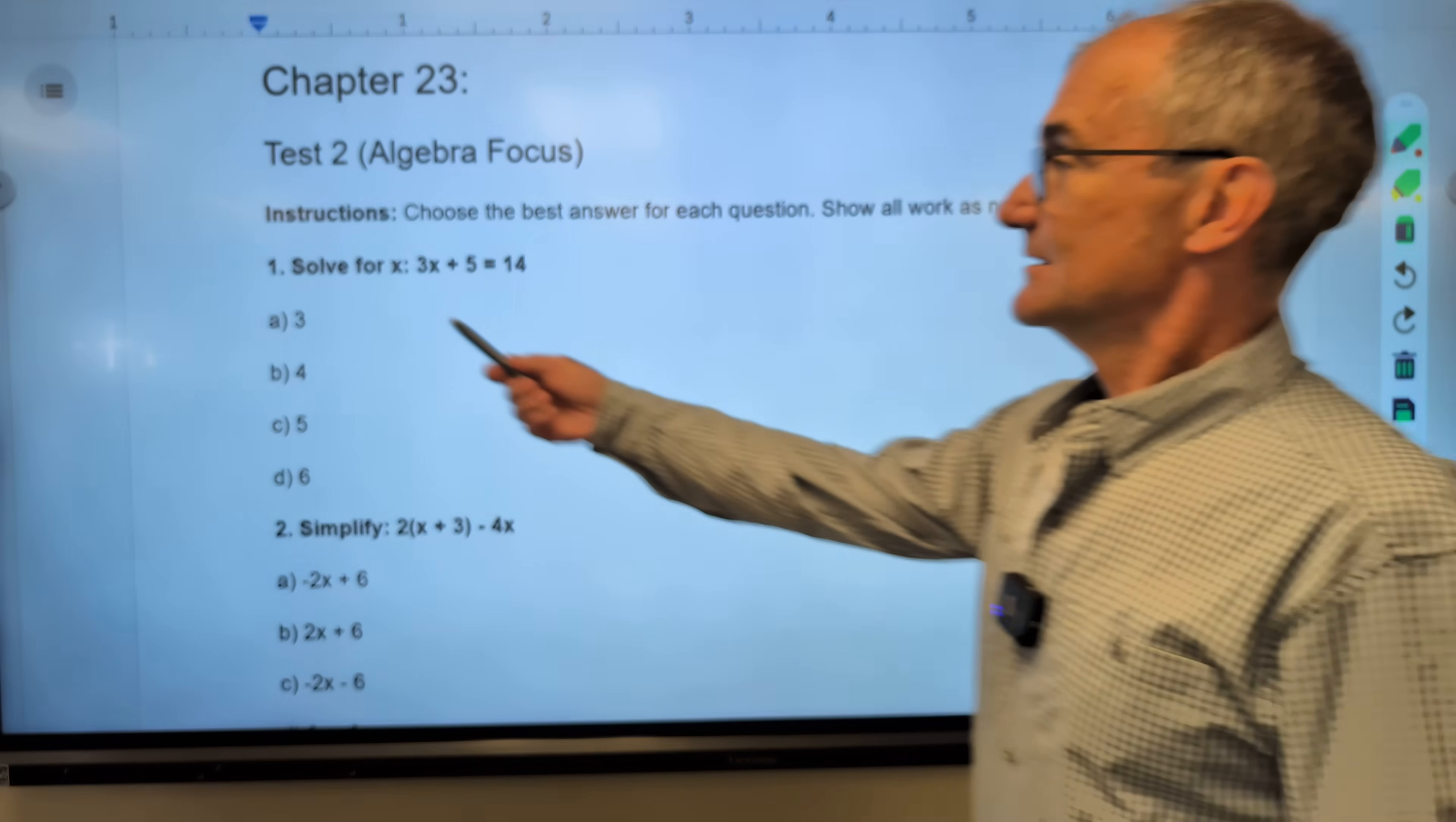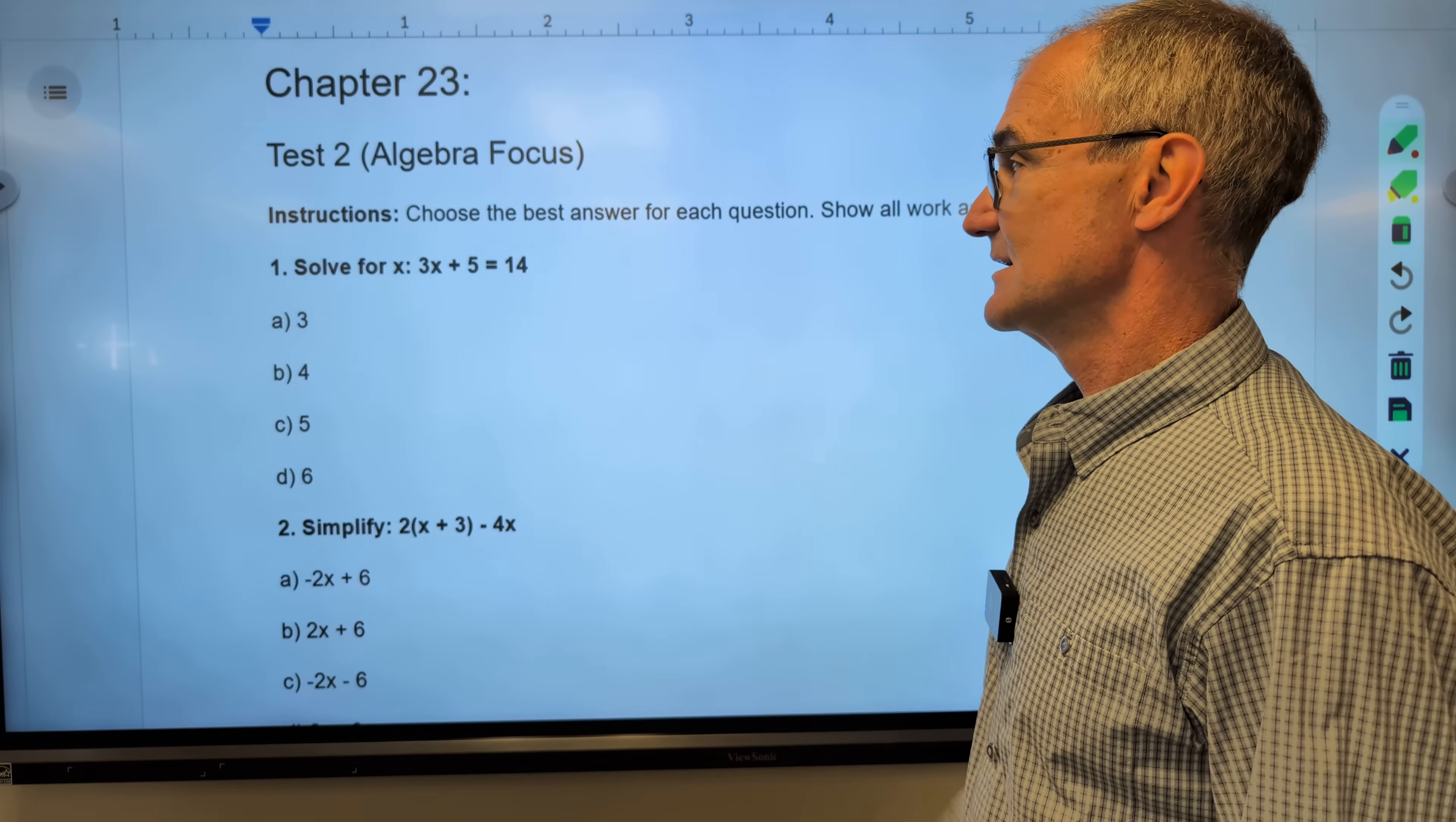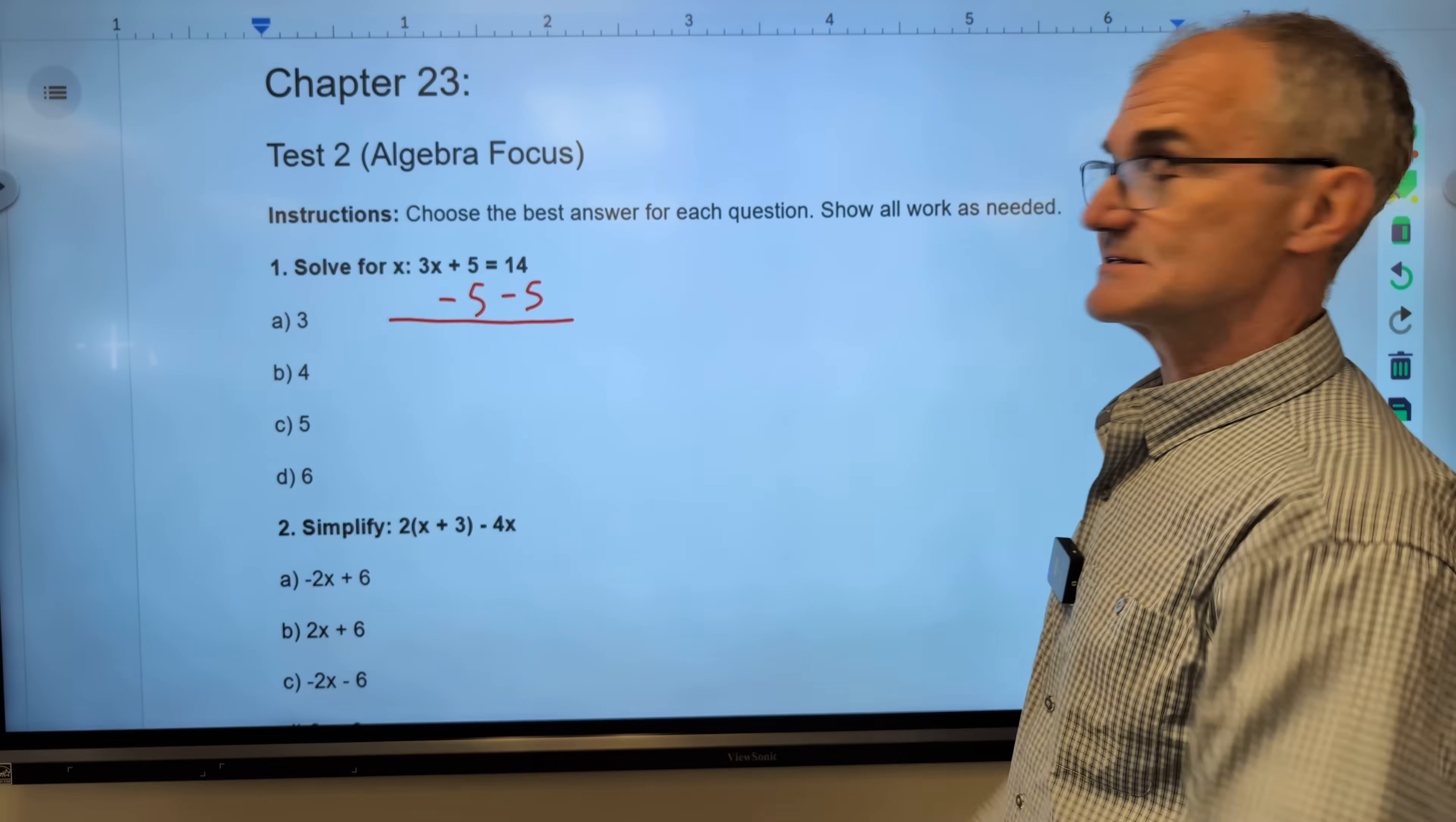So number one right here, solve for x. This is saying you have to get that variable x all by itself. This is an equation because it has an equal sign. What I want to do here is a reverse of order of operations. I need to work to get that x by itself. I have 3x plus 5 equals 14. First thing I want to do is subtract that 5 from both sides of the equation. I could do whatever I want as long as I do it to both sides of the equation.